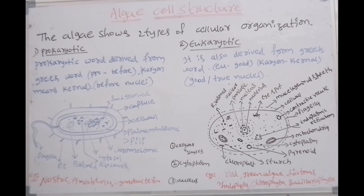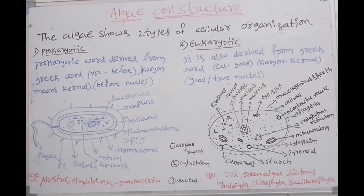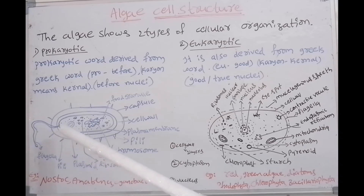The motile forms also possess flagella. In eukaryotic algae, flagella are present, and these flagella have a 9 plus 2 structure. Flagella are of 2 types: whiplash and tinsel. Whiplash means the flagellum is smooth, and tinsel has finger-like structures. This is a smooth flagella, that's why it is called whiplash. The tinsel has finger-like secondary appendages. So this is the eukaryotic cell structure.